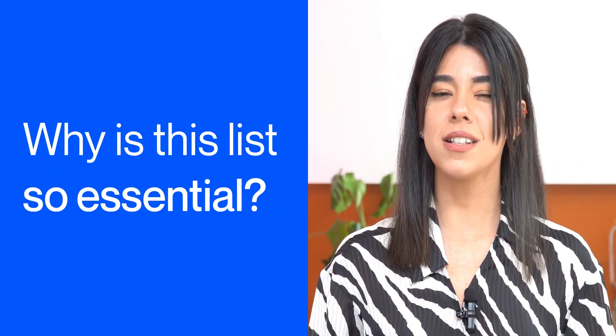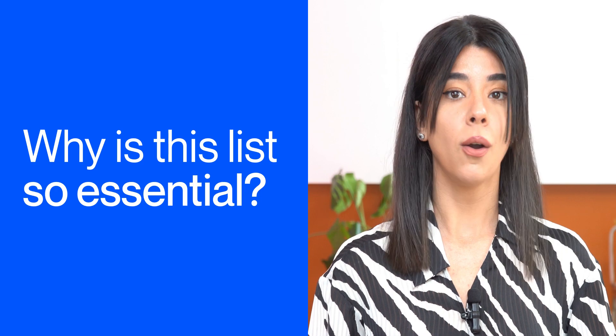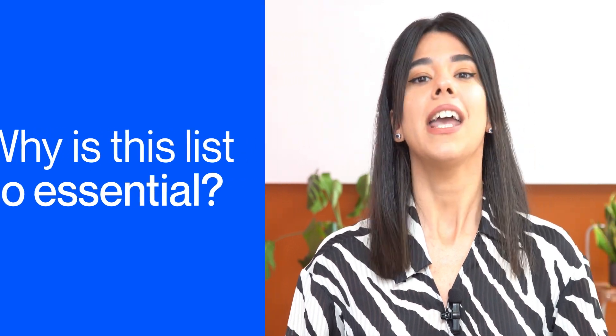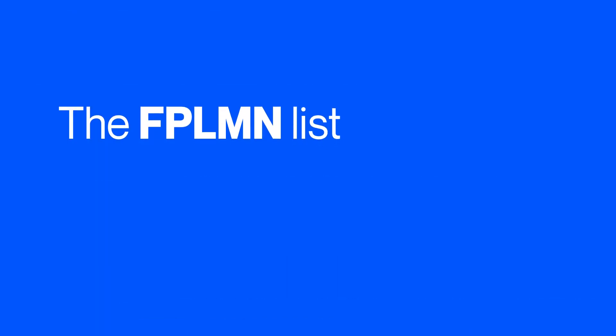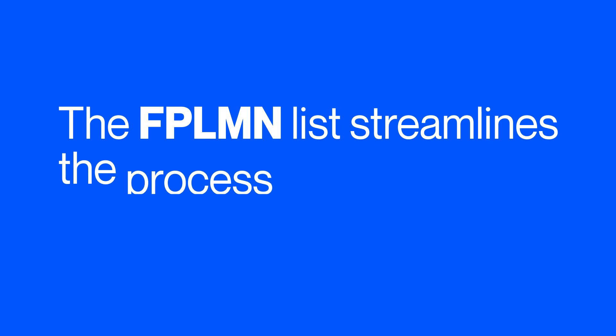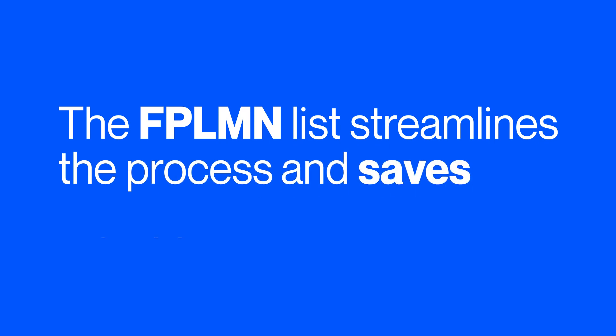Why is this list so essential? Well, imagine your device tirelessly trying to connect to networks that aren't even available — it's like knocking on a locked door repeatedly. Such a waste of time. By reducing connection attempts to unavailable networks, the FP Element List streamlines the process and saves valuable time.